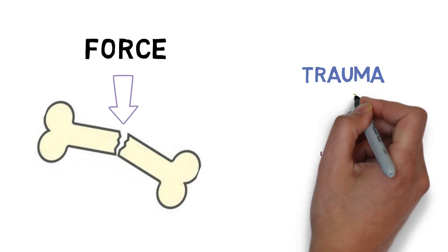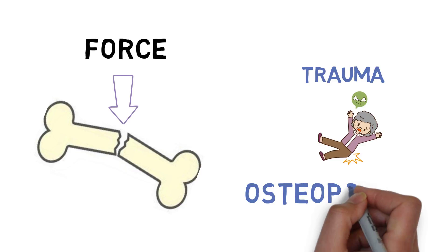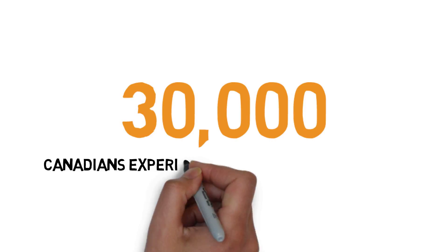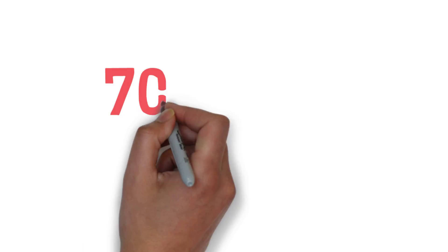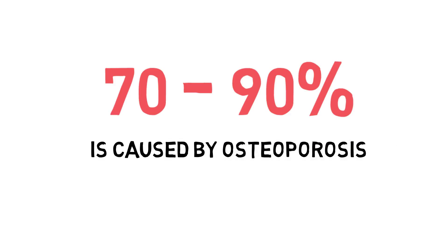Fractures can occur due to trauma such as falling or due to bone weakening diseases such as osteoporosis. Almost 30,000 Canadians experience a hip fracture each year. Of that 30,000, 70 to 90 percent is known to be caused by osteoporosis.